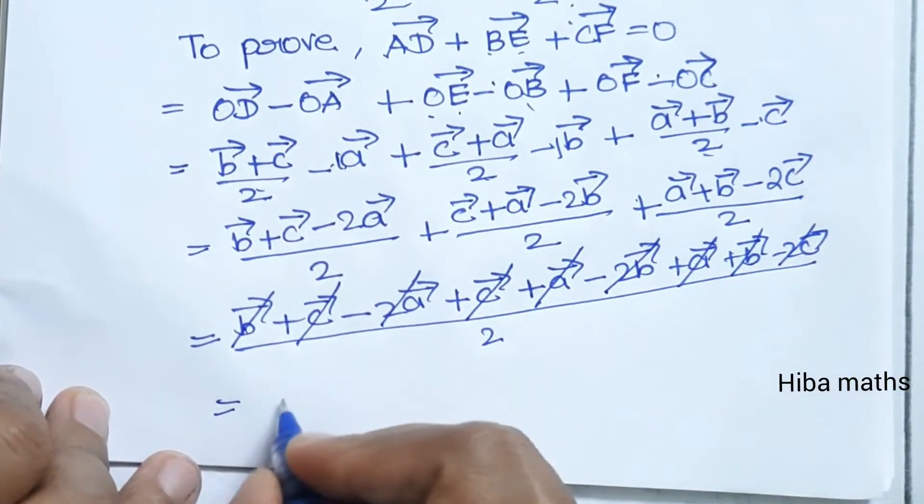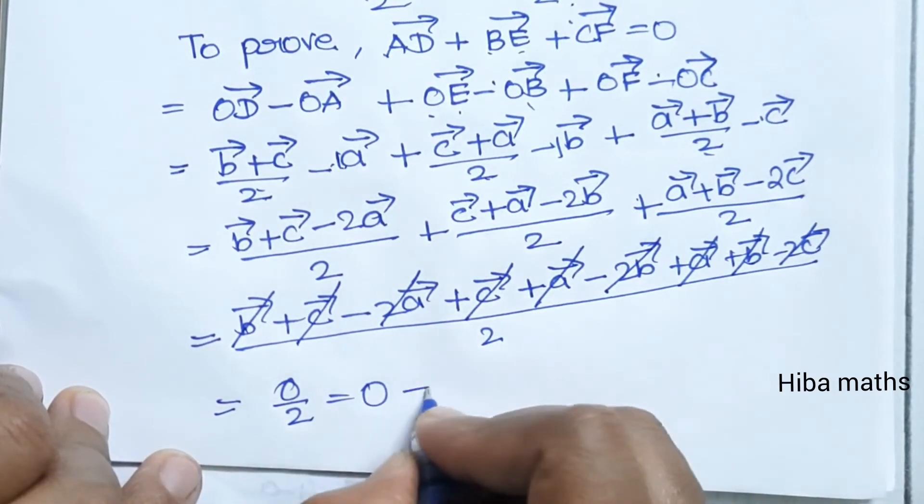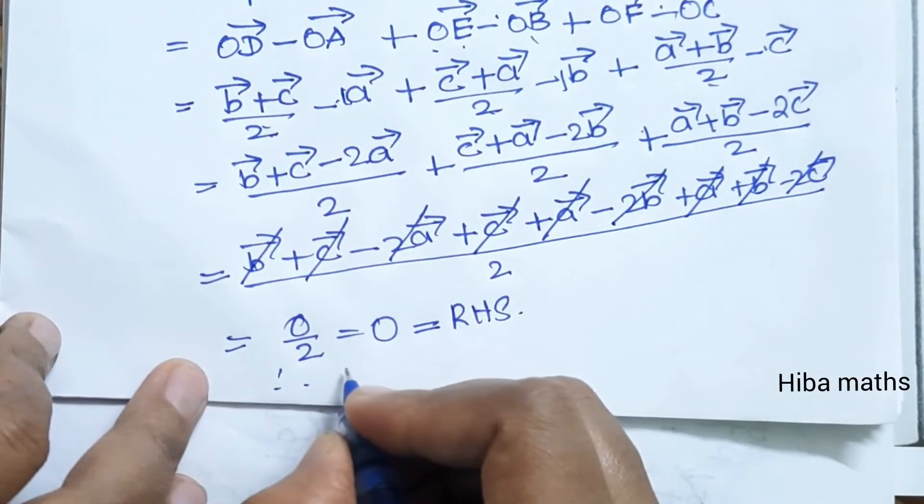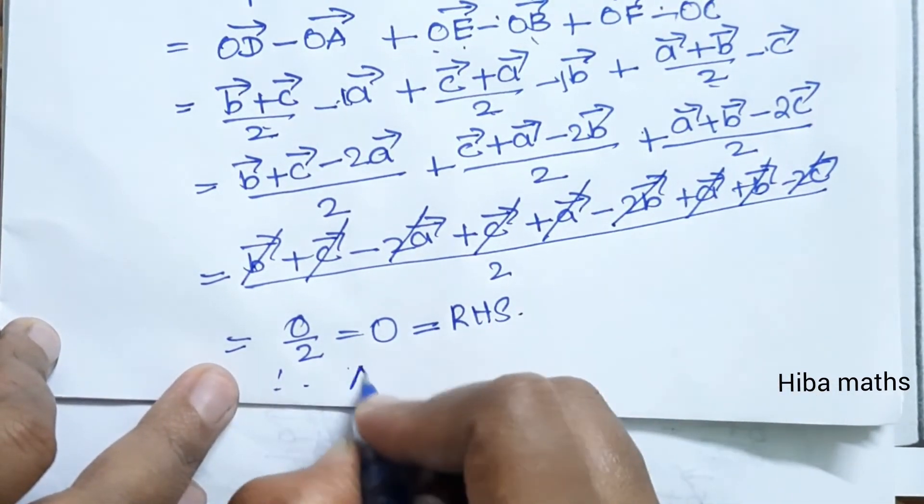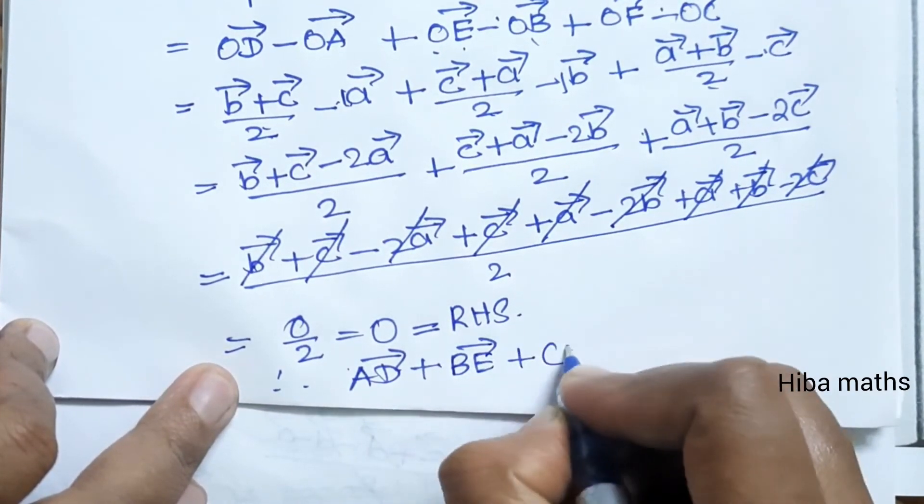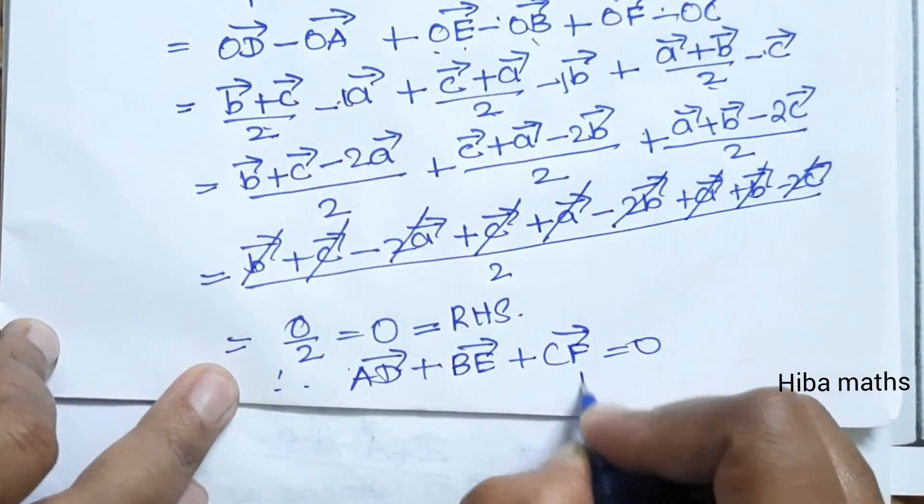B vector plus B vector plus B vector gives 3B vector. That is minus 2C minus 2A plus A plus A. Canceling these out gives 0 divided by 2 equals 0, that is equal to RHS. Therefore, AD vector plus BE vector plus CF vector equals 0.